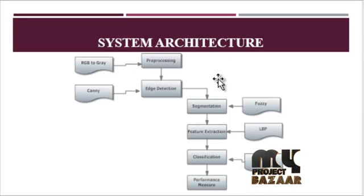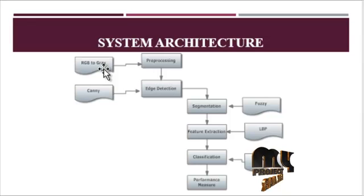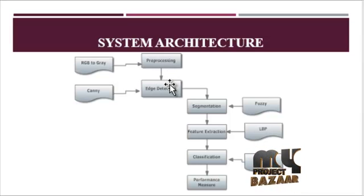This is our system architecture. Preprocessing stage contains the IM resize function to resize the input image, then RGB to gray conversion is done. If the input image is RGB, it's converted into gray.